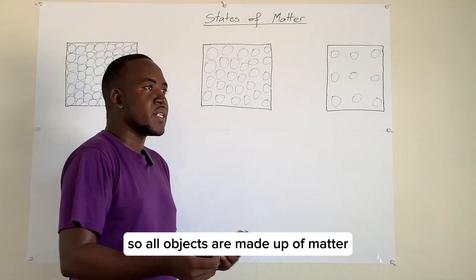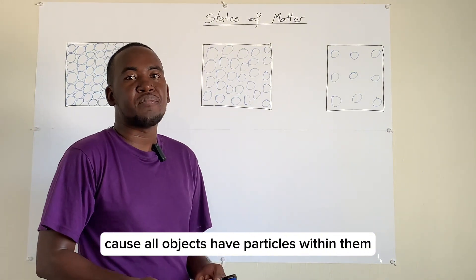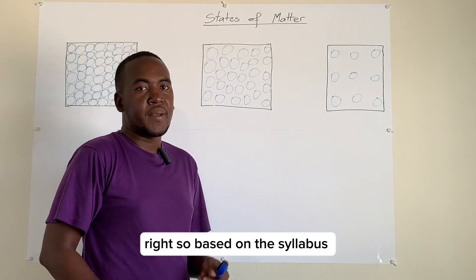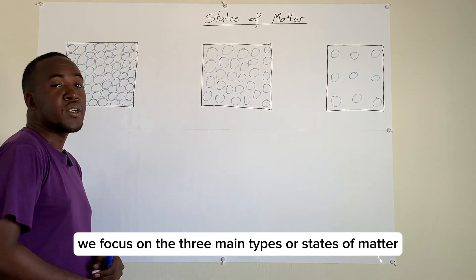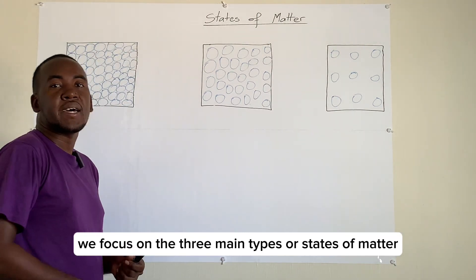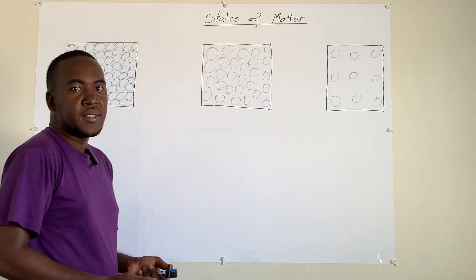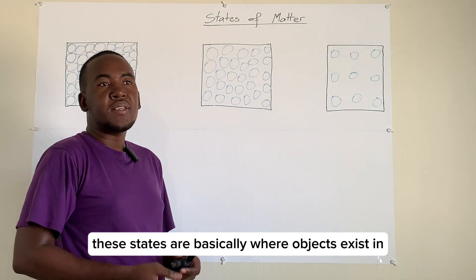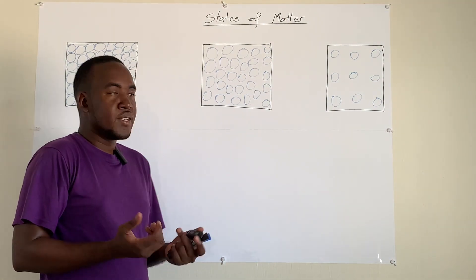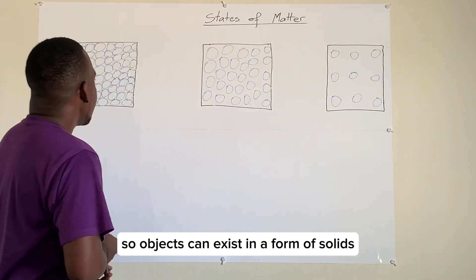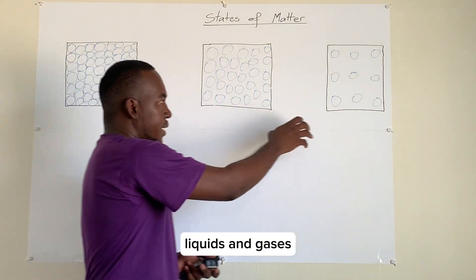All objects are made up of matter because all objects have particles within them. Based on the syllabus, we focus on the three main types or states of matter. These states are basically where objects exist in. So objects can exist in the form of solids, liquids, and gases.